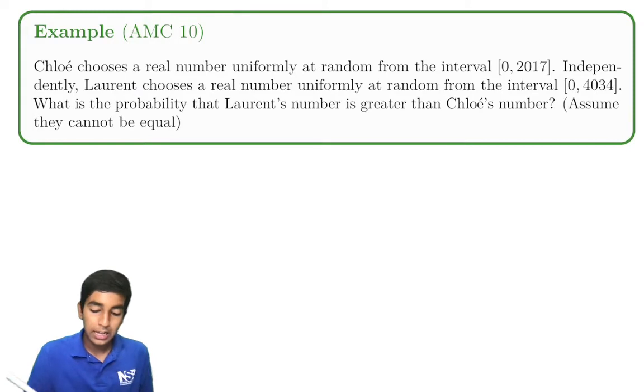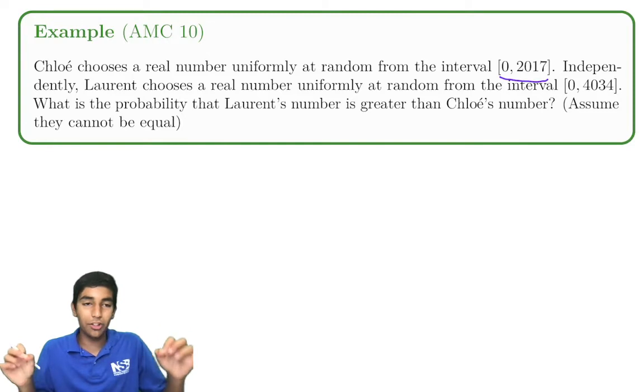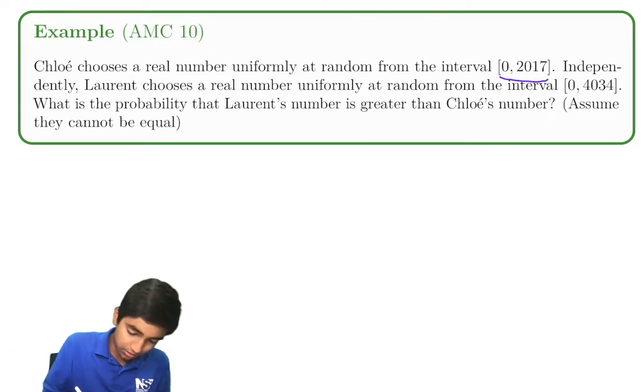Chloe chooses a real number uniformly at random from this interval 0 to 2017. Independently, Laurent chooses a real number at random from the interval 0 to 4034. What's the probability that Laurent's number is greater than Chloe's number? Assuming they can't be equal. Well, it doesn't matter whether they're equal, because we're talking about an infinitely possible amount of possibilities here. And compared to that, equals infinitely small, but as you're about to see here.